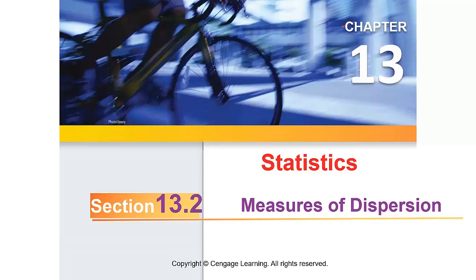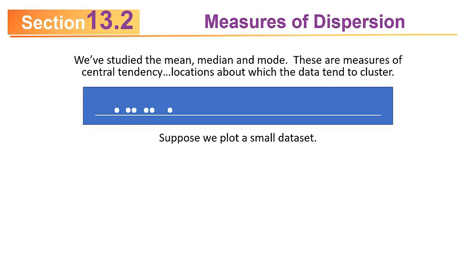Today we'll cover Section 13.2 on measures of dispersion. In the previous section we studied the mean, median, and mode. Those are measures of central tendency, in other words, locations around which the data tends to cluster.